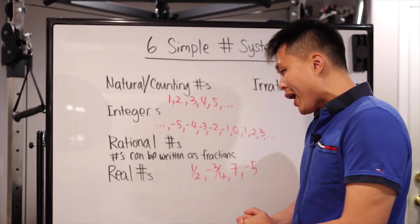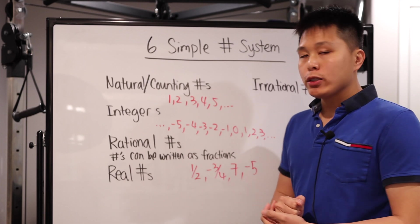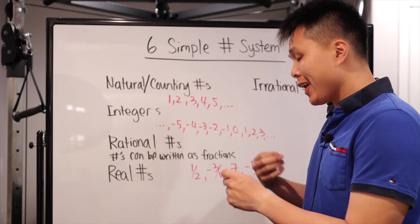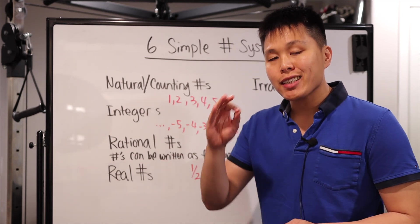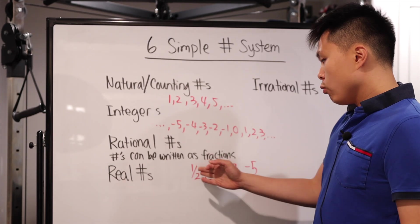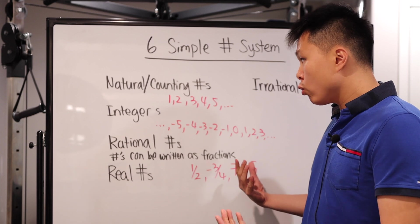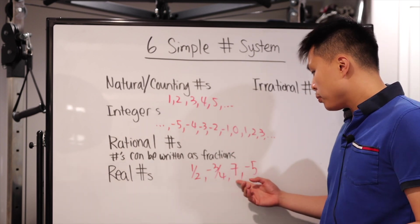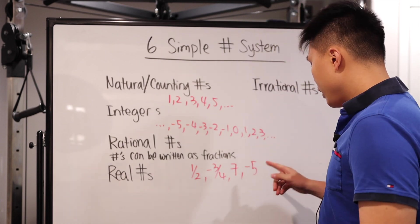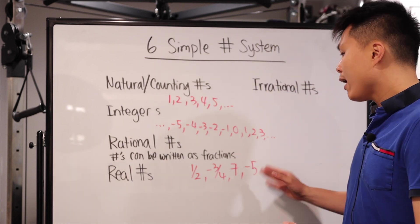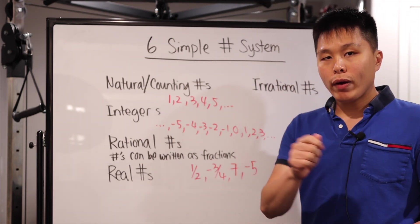Now we have the rational numbers. There is a more precise definition, however the best way to remember this is that they're basically numbers that can be written as a fraction. Key word: can be — sometimes you won't see them as a fraction, but that does not mean it's not a rational number. So one half, negative three over four are examples. Seven, even though it looks like just a whole number, is also a rational number because you can write it as seven over one. Negative five — same thing — you can write it as a fraction, therefore it is a rational number as well.